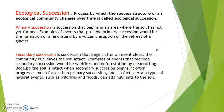Disturbance can set back the seral stage of succession. Succession may occur over a very long time or a short time. It may be either primary or secondary succession. Primary succession is the succession that begins in an area where the soil has not yet formed — where barren land exists. Examples of events that precede primary succession include the formation of new islands by volcanic eruptions or the retreat of a glacier.